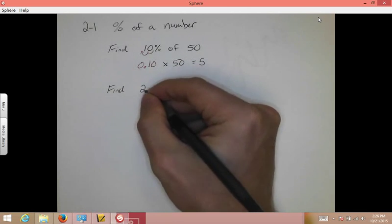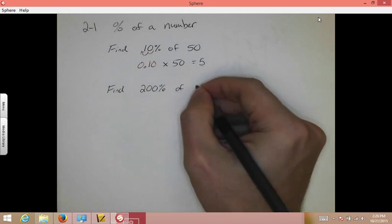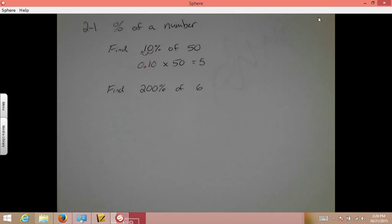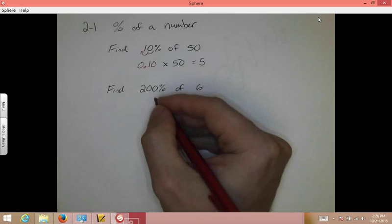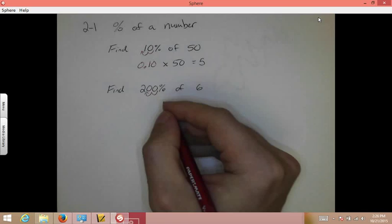find 200% of 6. Since I don't see a decimal here, I assume it's all the way at the far right, move it to the left, two spots, always do the Beyonce, to the left, to the left.